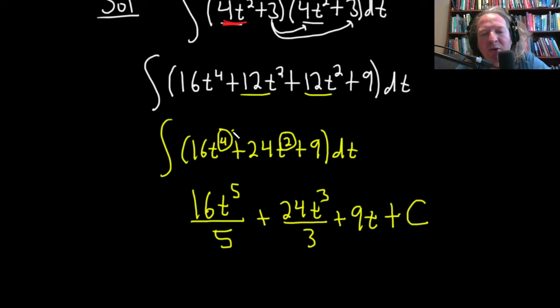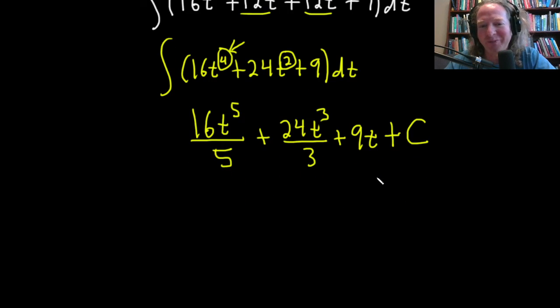So again, the power rule says when you have a number to a power, as long as that power is not negative 1, you basically add 1 to it and divide by the result. So 4 plus 1 is 5. There's the 5. 2 plus 1 is 3. There's the 3. A number by itself. Just tack on the variable. Plus 9t. And don't forget big C, which is our constant of integration. All right.